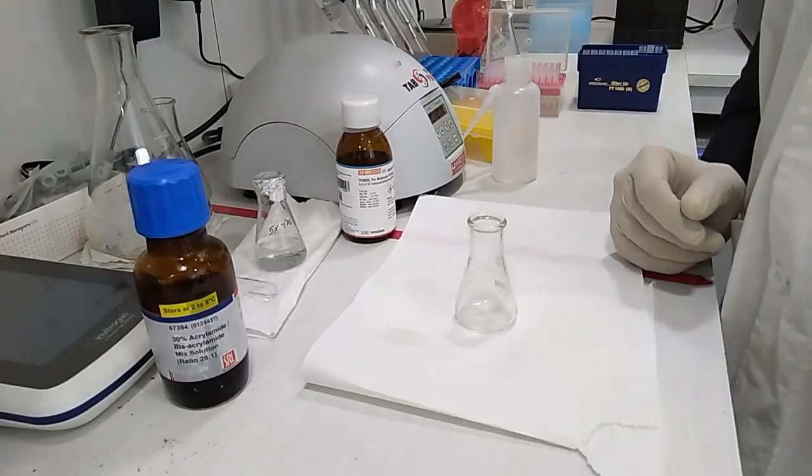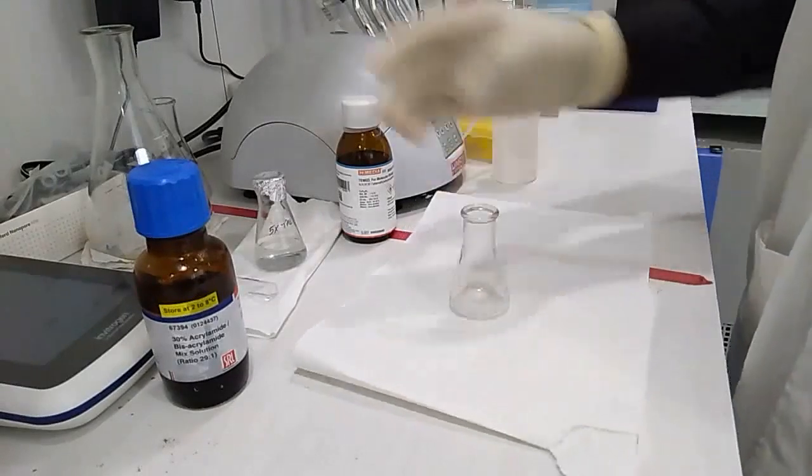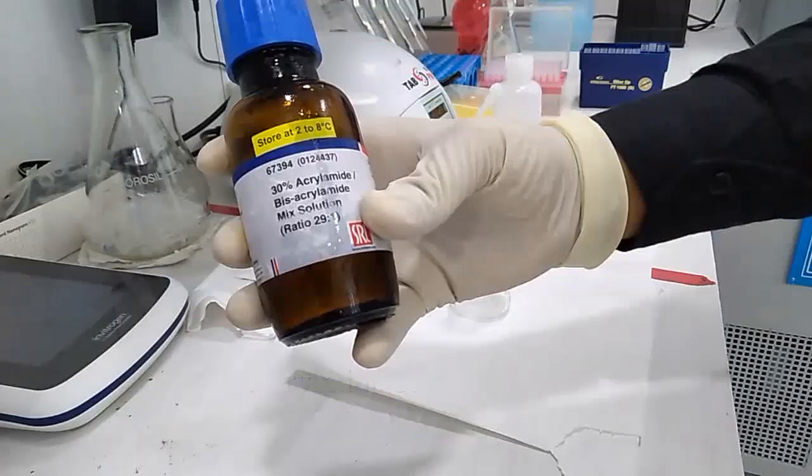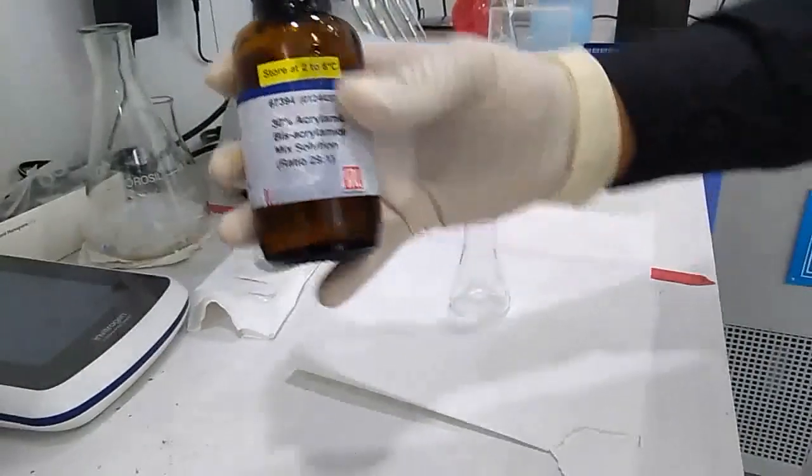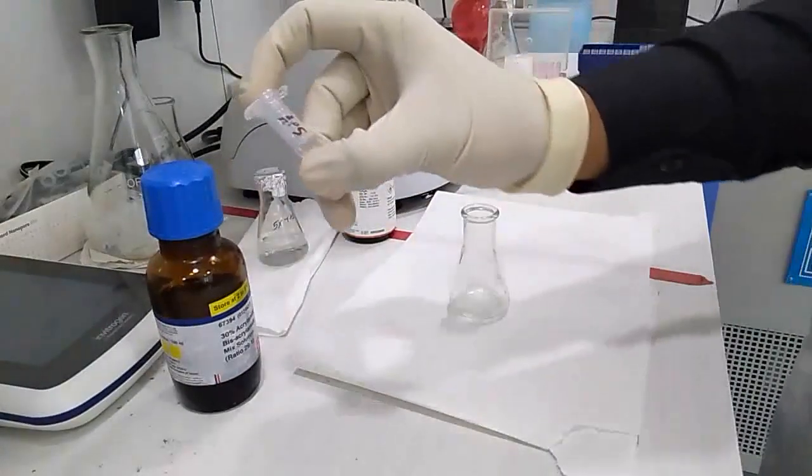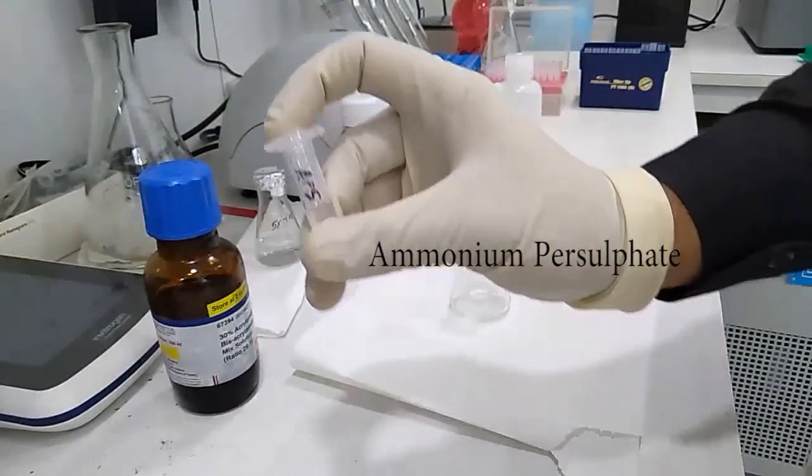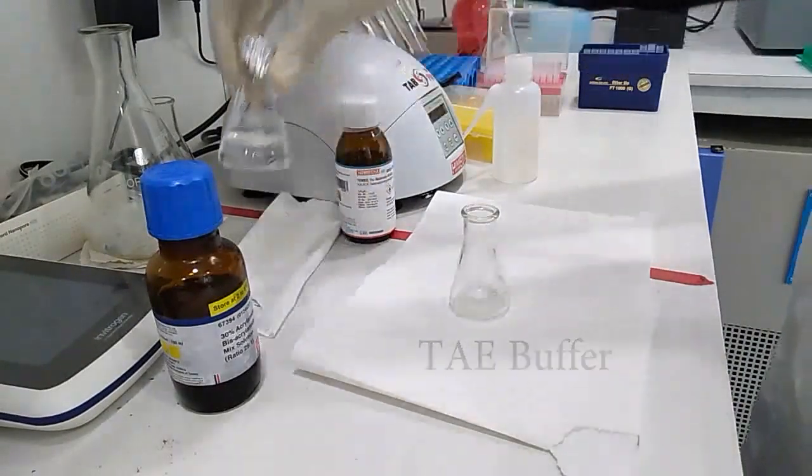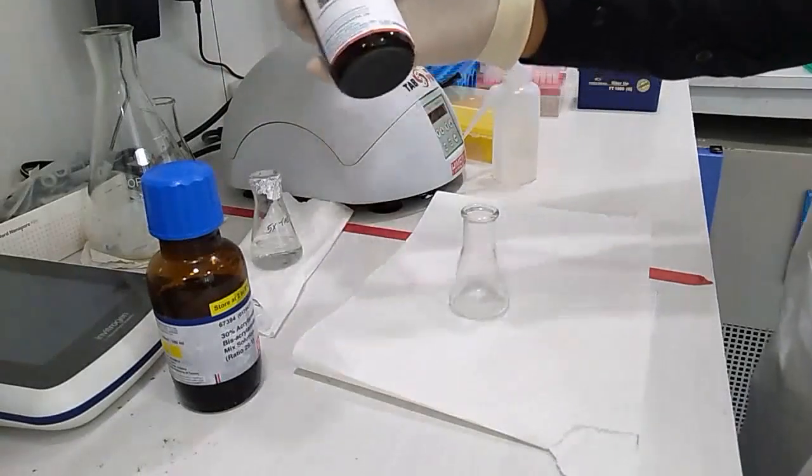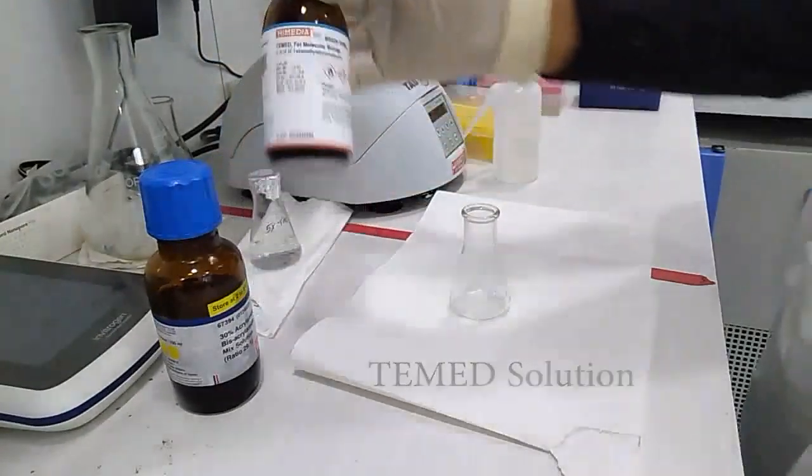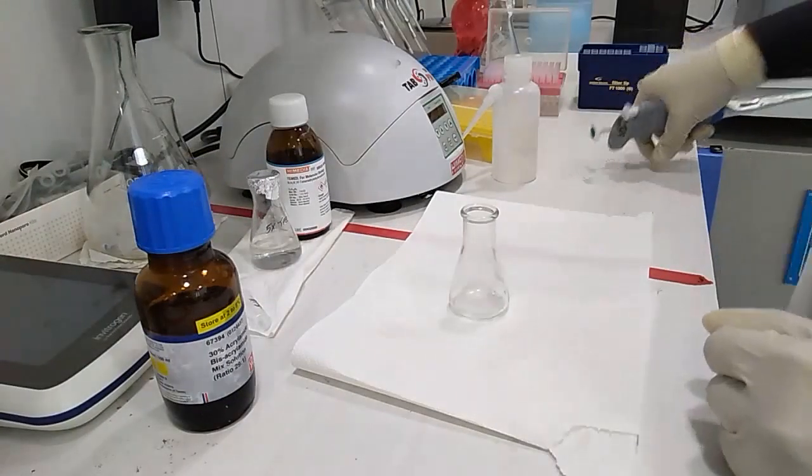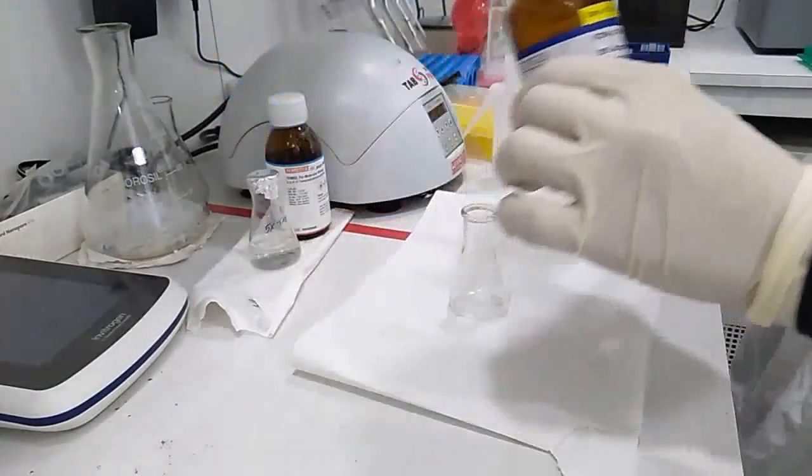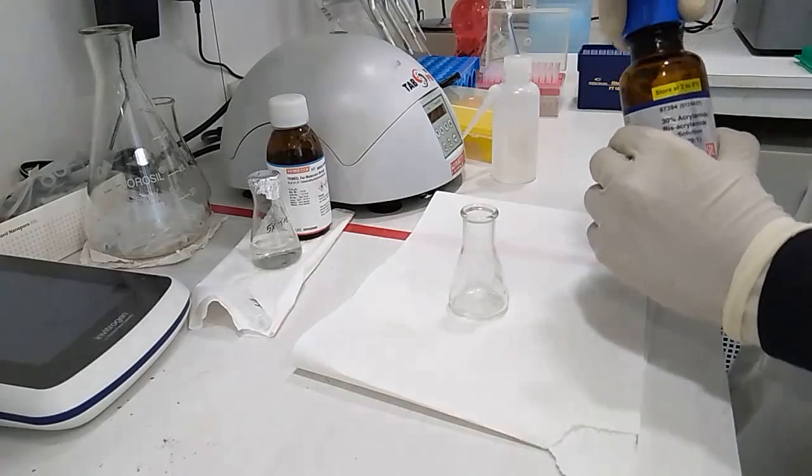This is the time for making polyacrylamide gel solution. For this we need 30% acrylamide bis-acrylamide mix solution 29 is to 1. We need APS ammonium persulfate solution which was solute before. We need 5x TAE and finally we need TEMED. So at first we need to give the acrylamide and bis-acrylamide solution mix in 29 is to 1 ratio.